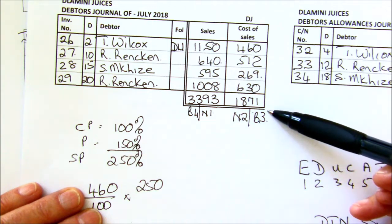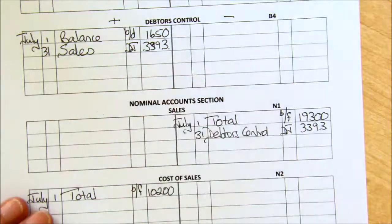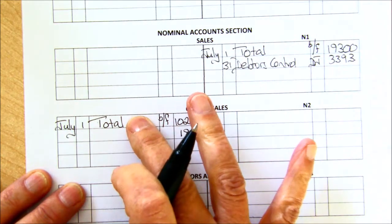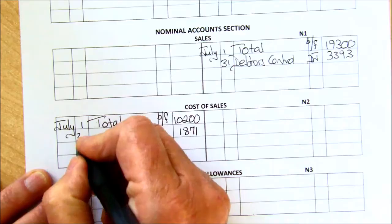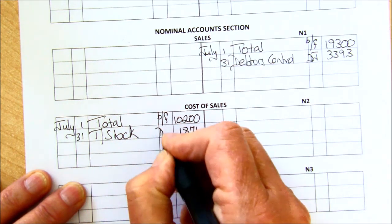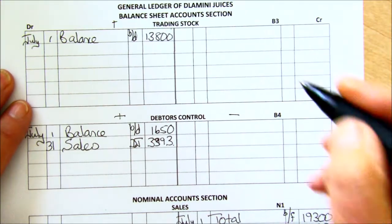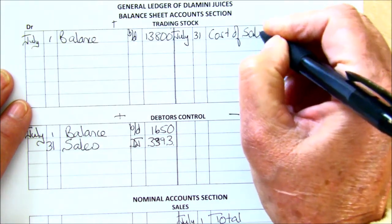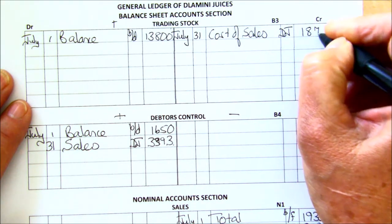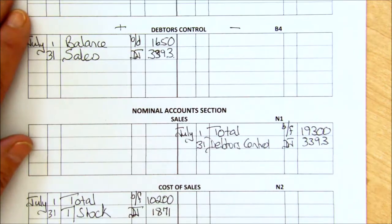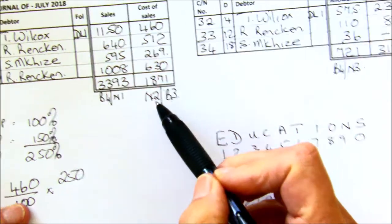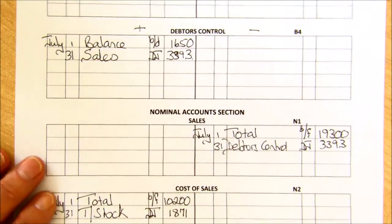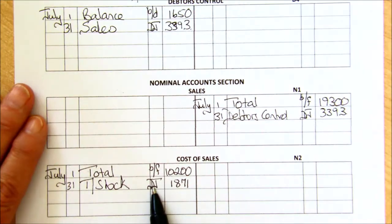Then you've got cost of sales — no difference to what we did before. Your cost of sales is an expense account that keeps a record of what these sales cost you, so the difference is the profit. The double entry for cost of sales is always our trading stock, because we are selling goods and our trading stock is going down. So we're minusing out of trading stock and debiting our cost of sales with the cost price of goods. That's B3 and N2. There's no difference to the cost of sales whether it's a cash sale or a credit sale — the only difference is that your folio will now be the debtors' journal.